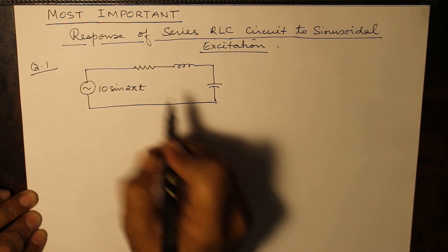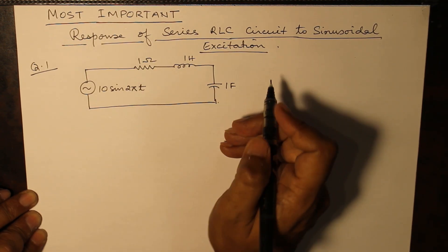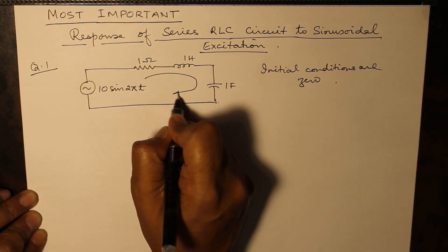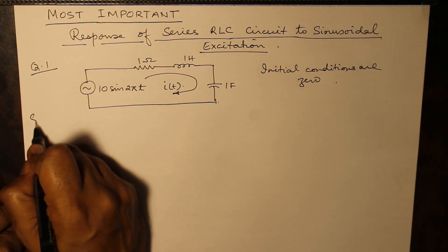1 Henry and 1 Farad, all for simplicity. Initial conditions are zero. Let us find out what is the current.